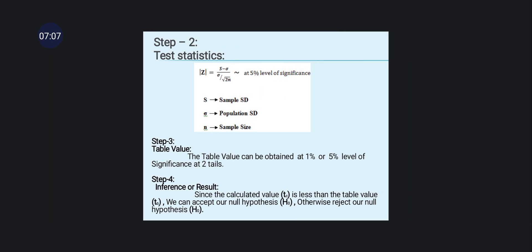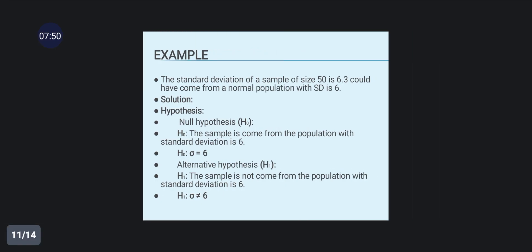Step 2: apply the test statistic formula. Step 3: obtain the table value at the 1% or 5% level of significance for a two-tailed large sample test. Step 4 — inference: if the calculated value |Z| is less than the table value at alpha, we accept the null hypothesis H₀; otherwise, we reject the null hypothesis H₀.